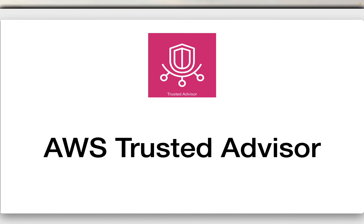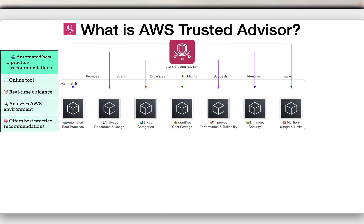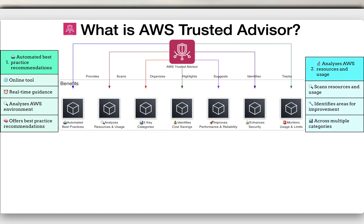Hello everyone and welcome to the lecture on AWS Trusted Advisor. AWS Trusted Advisor is an online AWS service that provides real-time guidance by analyzing your AWS environment and offering best practice recommendations. Trusted Advisor scans your AWS resources and how you use them, identifying areas for improvement across multiple categories.